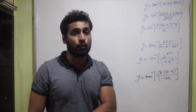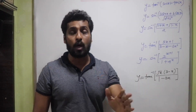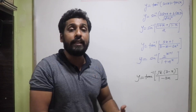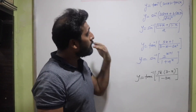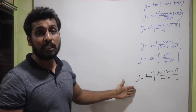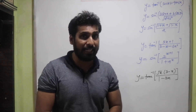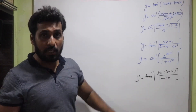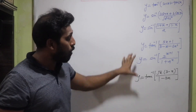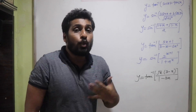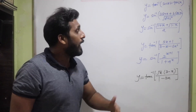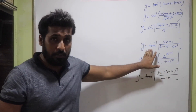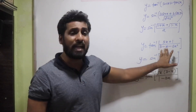For tan⁻¹(x) the derivative is 1/(1+x²), but here inside we have sec x + tan x, not just x. Differentiating that directly using composite functions would be time-consuming. Whenever you get a problem on inverse trig functions, try to arrange the terms so that if the outer function is tan⁻¹, you get tan inside the bracket.